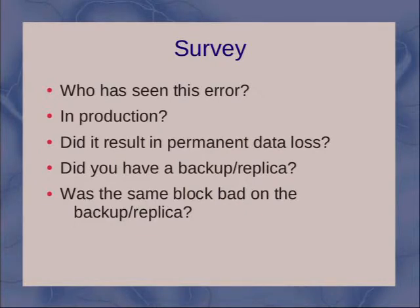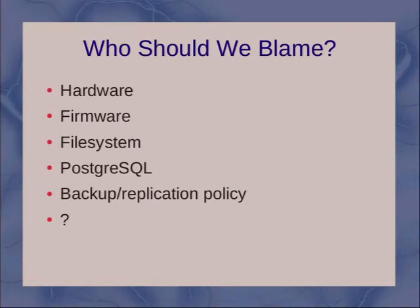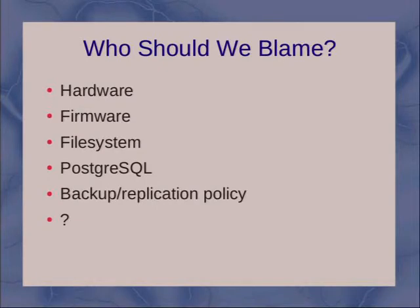So no permanent data loss for the people with backups or replicas yet. One thing I'll be talking about through this talk is sometimes you'll end up in a situation where the same block ends up bad on the primary and you think you have a backup, but in reality that same block might be bad. So the first question we need to answer is who should we blame? There are a lot of different pieces involved, and we'd like to figure out what the responsibility of each component is, what's failing, which components should be checking the other components. The first reaction, of course, is to blame the hardware, the RAID controller, storage system, or firmware. That is a totally reasonable, valid place to start. Unfortunately, it doesn't get you very far because you don't have a whole lot of control.